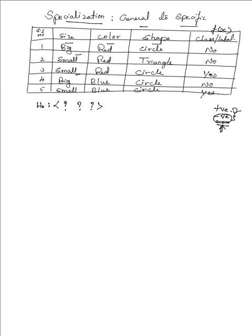We start with the general hypothesis and take the first row of data, instance I1. In I1 we have big, red, circle. If you see the class label, we have 'no' — so it is a negative instance. We have to generate a hypothesis for this negative instance.